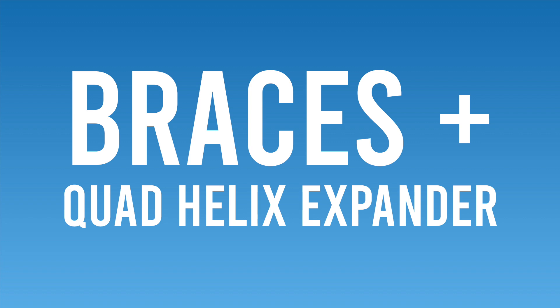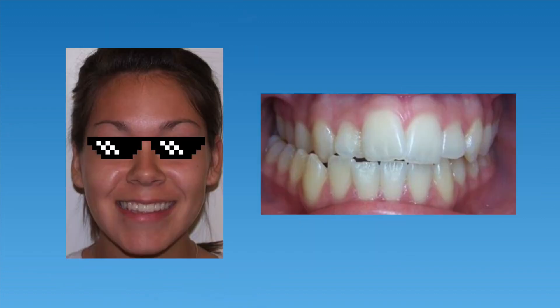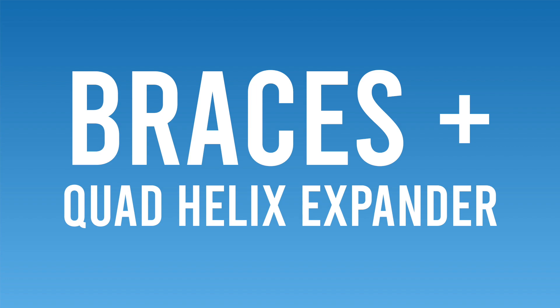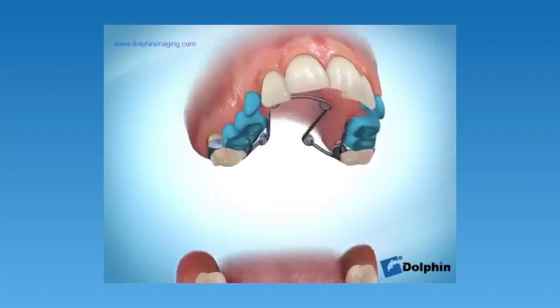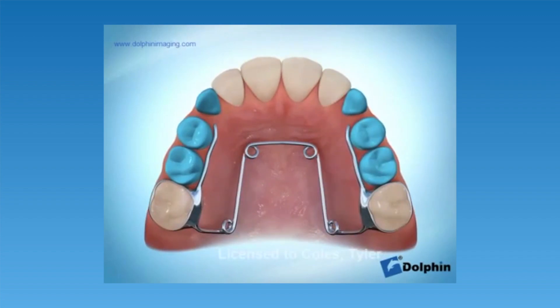Next, let's discuss the treatment of a moderate posterior crossbite. If a patient has a more serious posterior crossbite, a combination of braces and a quad helix expander may be needed. This patient is a good example of a unilateral posterior crossbite — a crossbite that occurs just on one side. These types of crossbites can often be treated with a combination of braces and a quad helix expander, which can be used with young children, teens, and adults. In this animation you can see how a quad helix expander can help expand the upper arch and correct a moderate posterior crossbite.